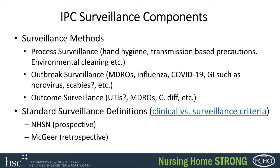Outbreak surveillance means having ways in your facility to identify if there was a multi-drug resistant organism outbreak. Flu, COVID, and GI illnesses like norovirus are key ones. I know one facility where we did an outbreak investigation that had to do with scabies — that was something they had to add into their risk assessment and plan for in the future.